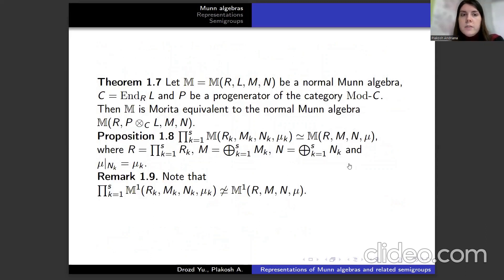Let us formulate a theorem. Let M be a normal Munn algebra, C its endomorphisms, and P be a progenerator of the category C-mod. Then M is Morita equivalent to the normal Munn algebra M'. We have some propositions in the remark with some equations as you can see.